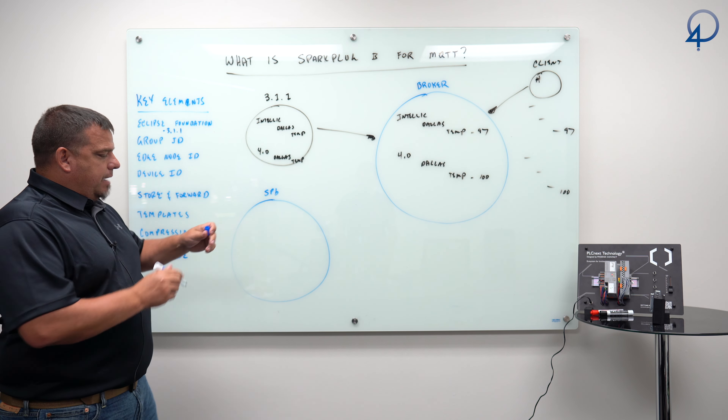Another important component: Spark Plug B has support for templates — user-defined data type templates, or UDTs. A template in Spark Plug B is the equivalent of a component spec in OPC-UA. There is also support for compression in Spark Plug B, meaning you can compress the payloads before sending them to the broker. The most important concept to understand is that we create edge-of-network nodes — Spark Plug B equals edge-of-network node.